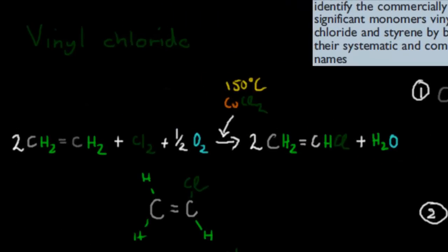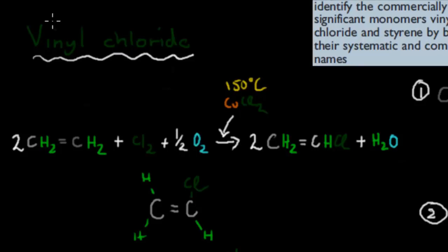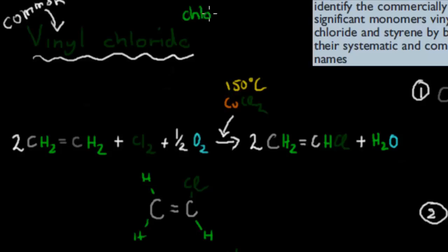So first we've got vinyl chloride. It says identify it by its common name and its systematic name. The common name is just what we call it in everyday life, so vinyl chloride's common name is vinyl chloride. Its systematic name, however, is a bit different — its systematic name is chloroethene.